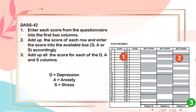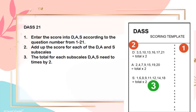D stands for depression, A stands for anxiety, and S stands for stress. For the DASS-21, first enter the score into the D, A, and S columns according to the question number from 1 to 21. Second, add up the score for each of the D, A, and S subscales. Third, the total for each subscale — D, A, and S — needs to be multiplied by 2.